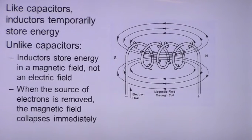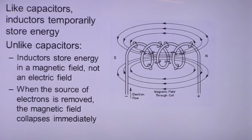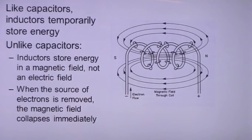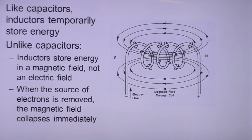Conductors store energy in the form of a magnetic field or electric field. As mentioned, the source of electrons from the collapsing magnetic field is what drives current back through the circuit.